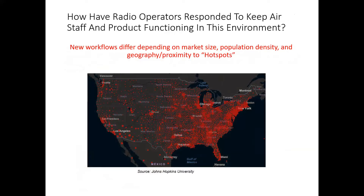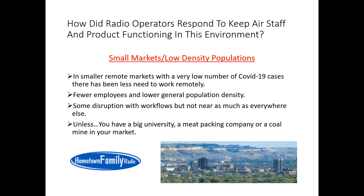How did workflows change? It depended on where you were and the hotspots. This is an old map from about a year ago — that map has totally changed. Now the hotspots are in the upper Midwest — Montana, Idaho, Wyoming. The hotspots from a couple months ago like Louisiana, Florida, Georgia, Alabama, and Mississippi are not quite as hot as they were before. In remote markets with very low numbers of COVID cases, there's been less need to work remotely, with fewer employees and lower population density.